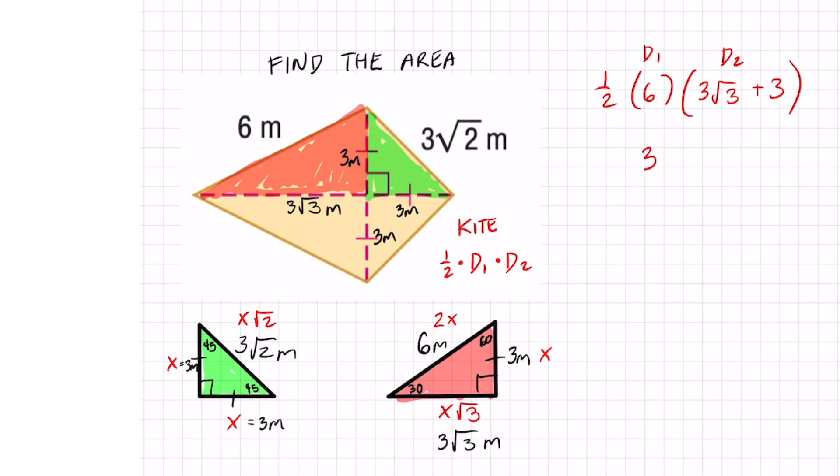One half times six is just three. And all I got to do is distribute that three on the outside and I end up getting nine root three plus three times three is nine. And don't forget meters squared because we're finding area.